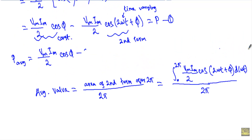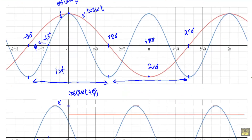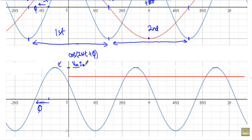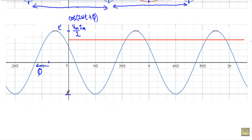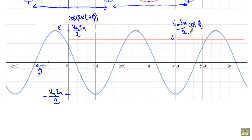The second term has a magnitude of Vm·Im/2, so the positive maximum magnitude is Vm·Im/2 and the negative maximum magnitude is minus Vm·Im/2. The constant first term Vm·Im/2·cos(phi) is shown as a straight line, and since phi is between 0° and 90°, cos(phi) is less than 1, so Vm·Im/2·cos(phi) is less than Vm·Im/2.